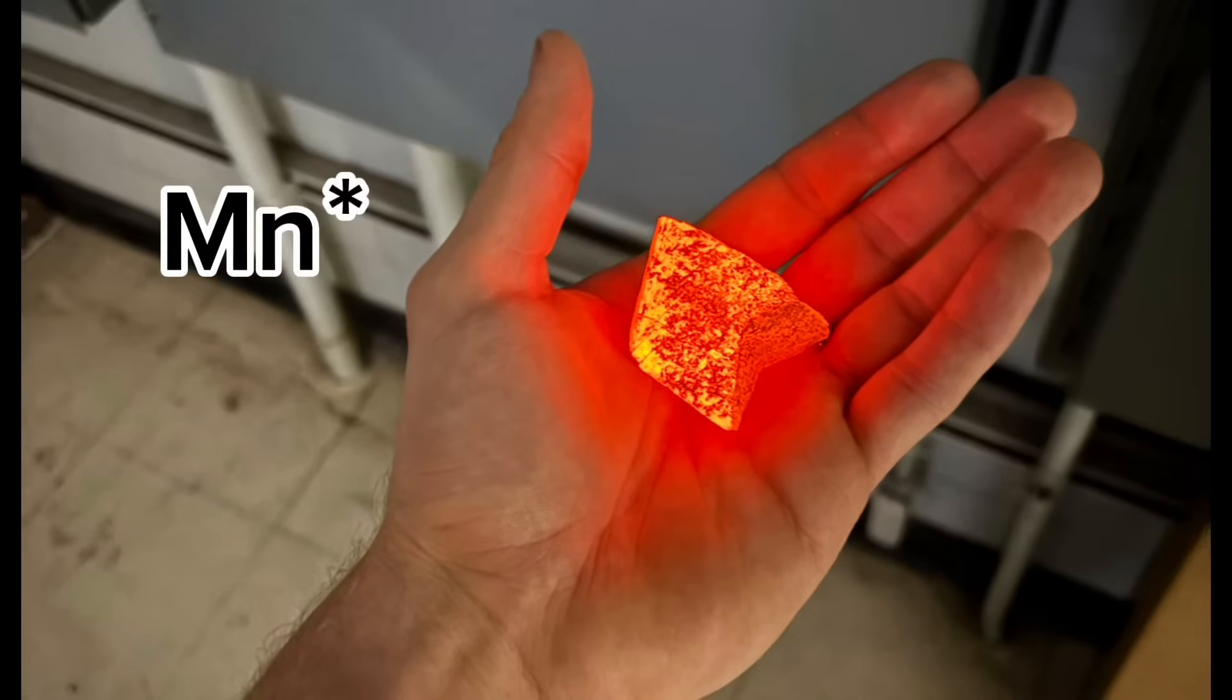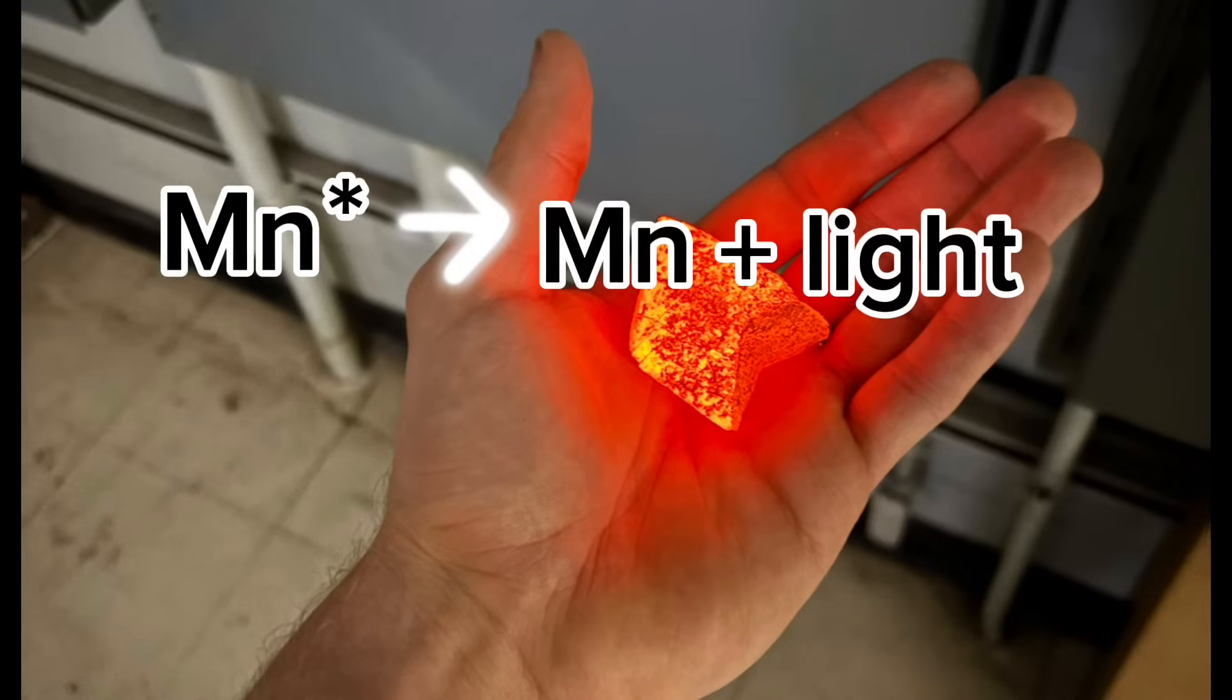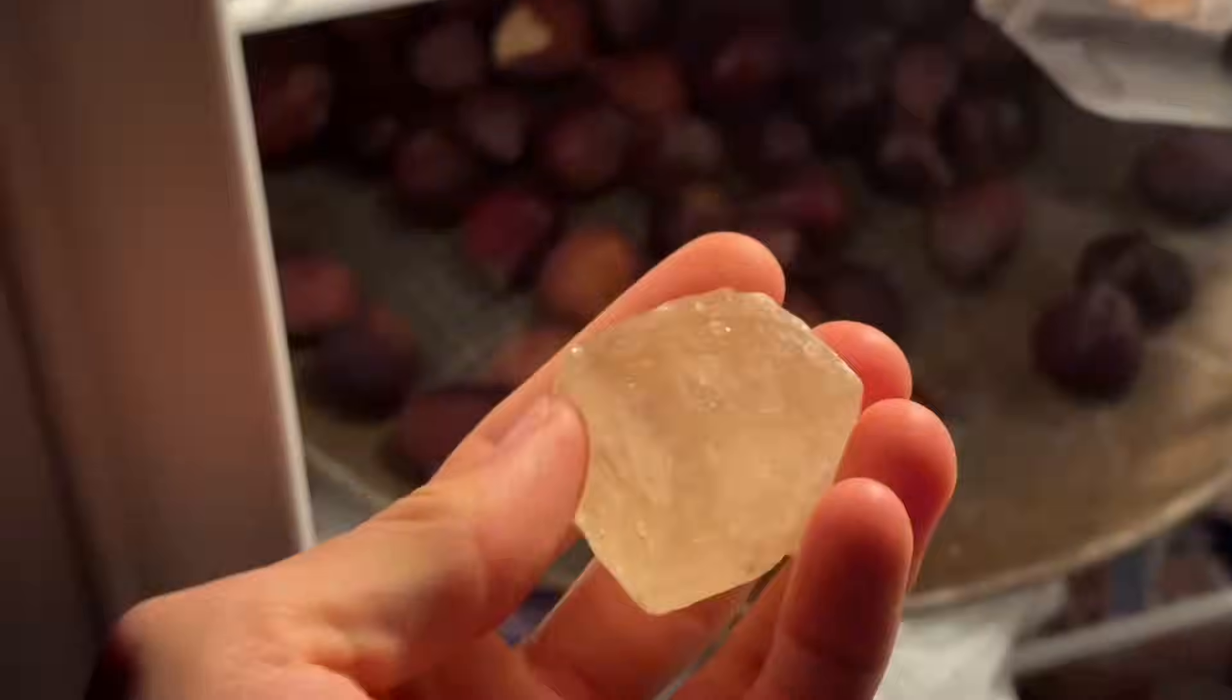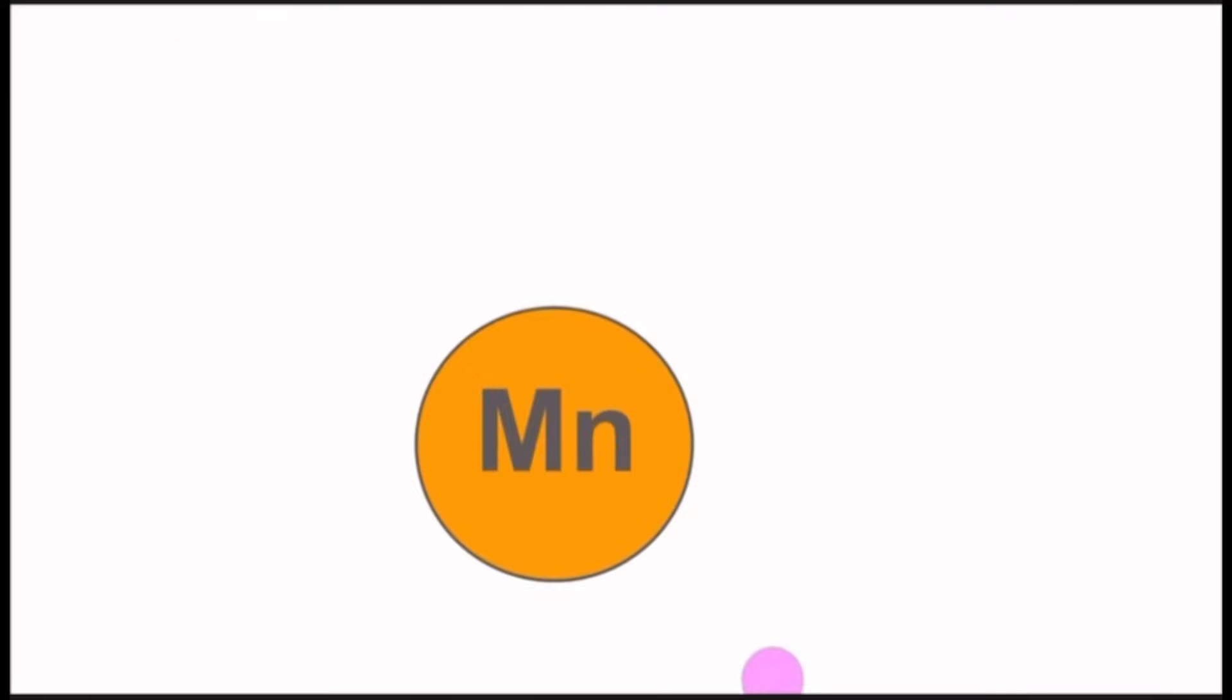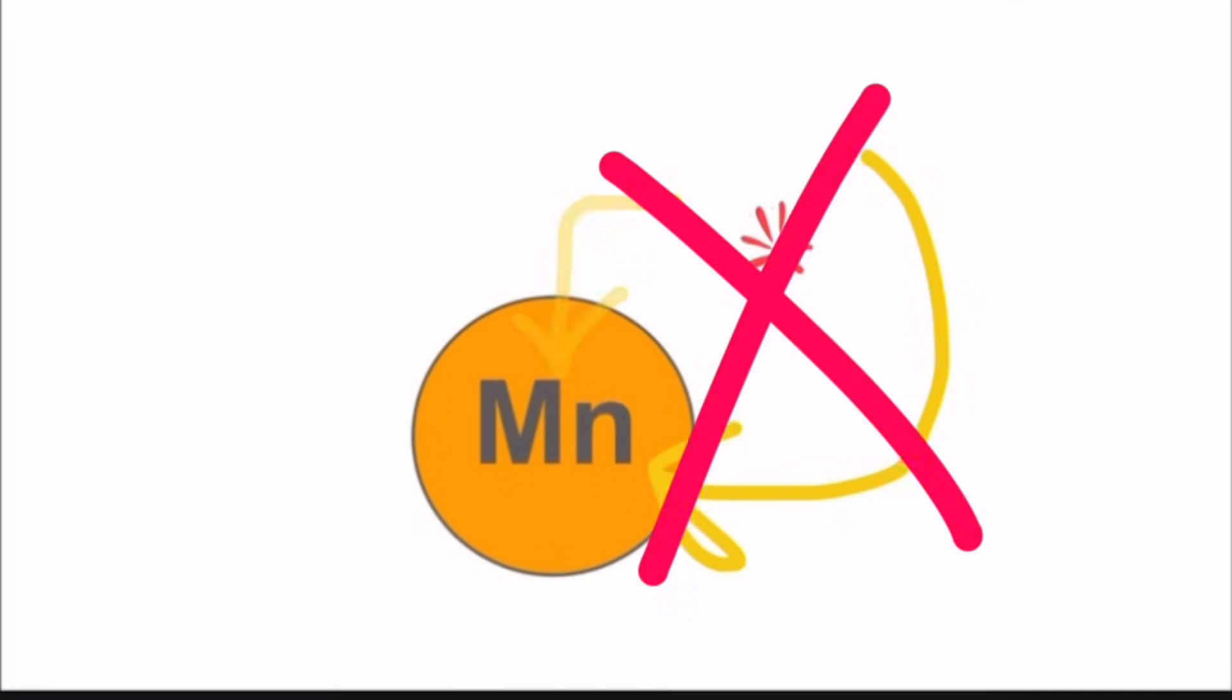This is where the orange glow comes from. From the decay of manganese from a higher energy state to a low energy state, and some of that energy differential being released as orange light. And this is also why the glow stops at low temperatures. Because at low temperatures, the electrons and holes are not detrapping themselves. They are not recombining.